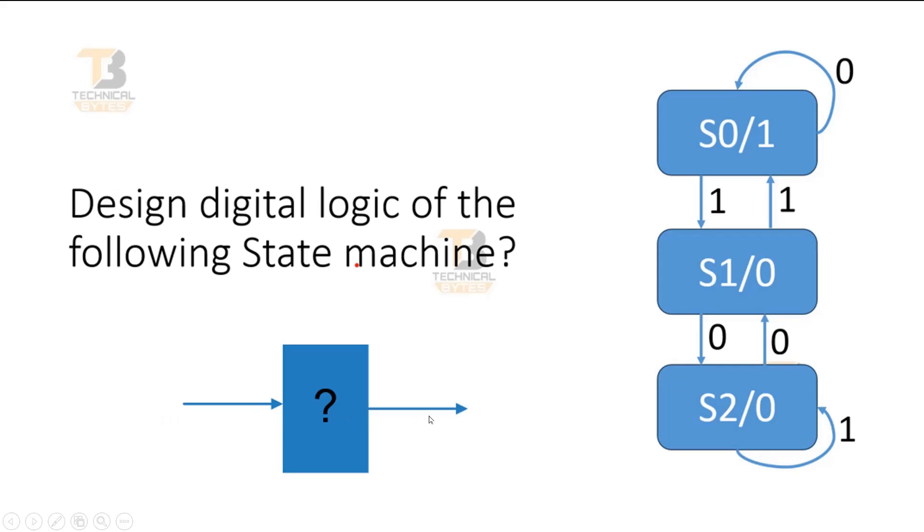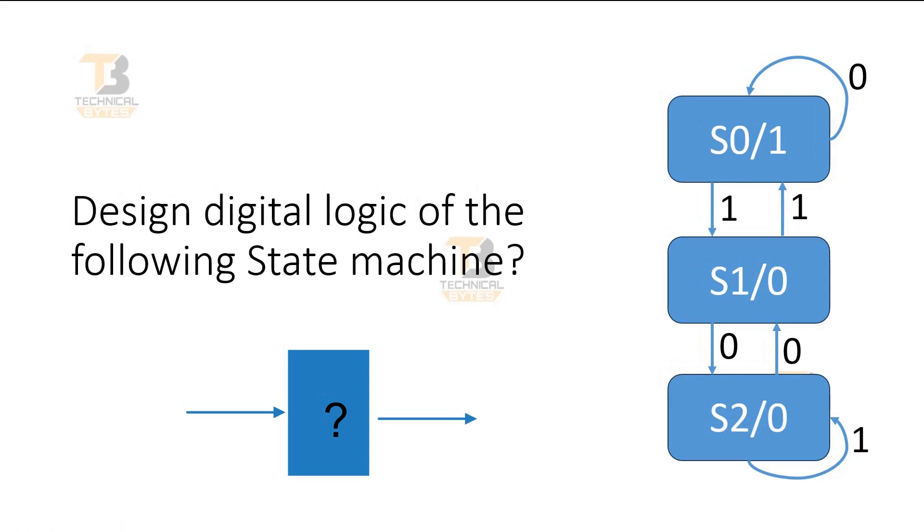For S0 state, output is always 1. For S1, output is 0, and for S2, output is 0. If input is 0, it will stay in the same state, that is S0. When input is 1, it will go to S1 state.